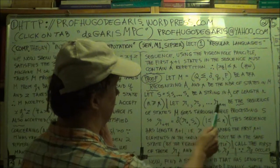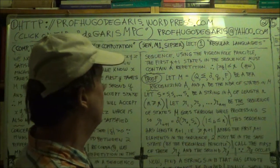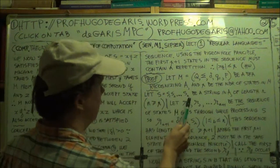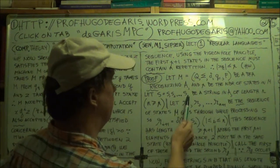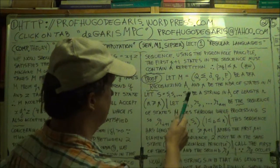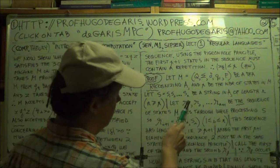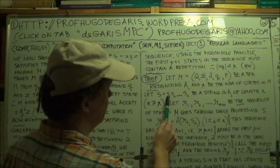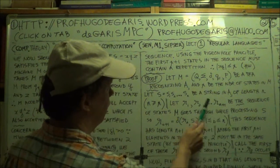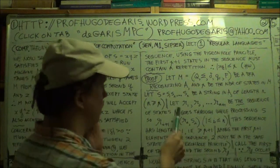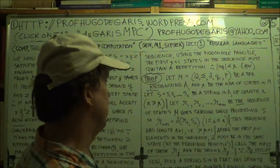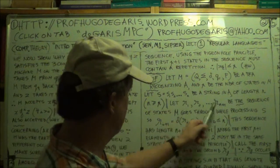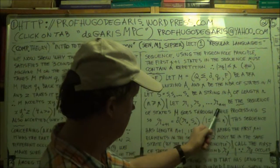Why is the sequence length n plus one? Why are there n plus one states? Because there are n symbols in your input string. You start off in the starting state, you read n symbols, and each time you read a symbol you go to another state. So r2 is the second state having read the first input symbol, and r_{n+1} is the final state having read the nth input symbol. So you'll have n plus one states in the sequence.